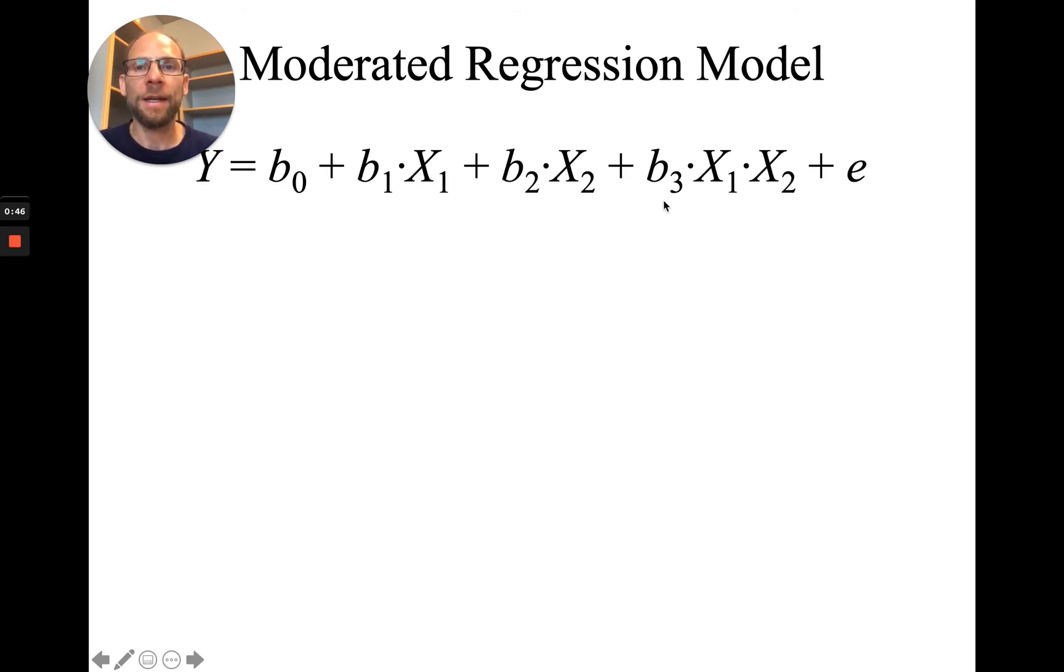Then we can test the regression coefficient b3 for significance if we fit this model, for example, in M+. And if b3 is significantly different from zero, this indicates that there may be a significant interaction effect between x1 and x2.